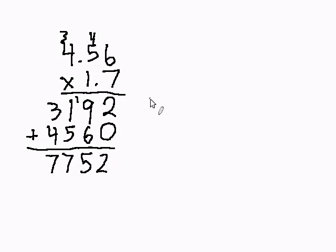Then, we go back to the original problem and we look at all the places that are to the right of the decimal. For the first number we have two places to the right, and here we have one. That's three total, so three places.